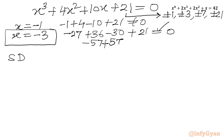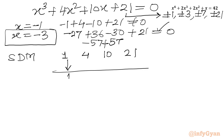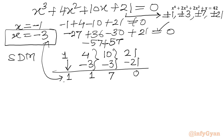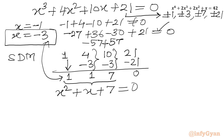Again using synthetic division with root x = −3 on coefficients 1, 4, 10, 21: −3×1=−3, add to get 1; −3×1=−3, add to get 7; −3×7=−21, add to get 0. The resulting quadratic equation is x² + x + 7 = 0, which is the same quadratic we solved in method 1. Its solutions are x = (−1 ± i·3√3) / 2.